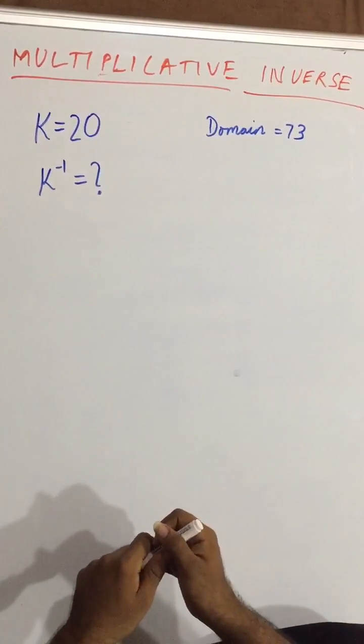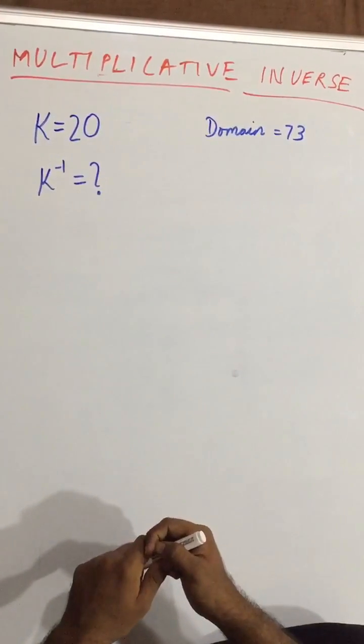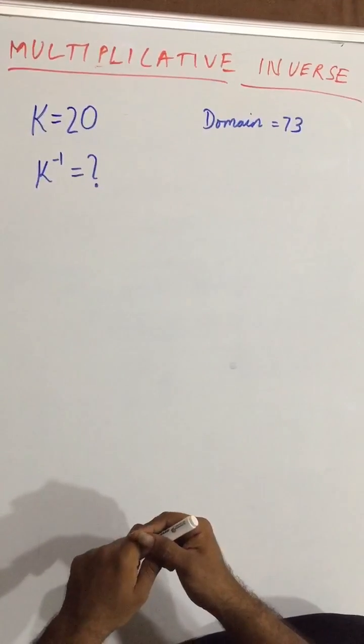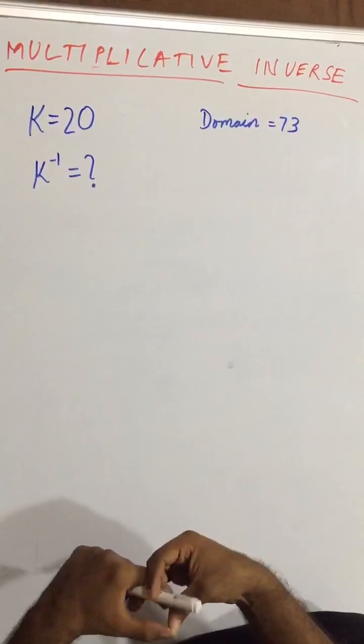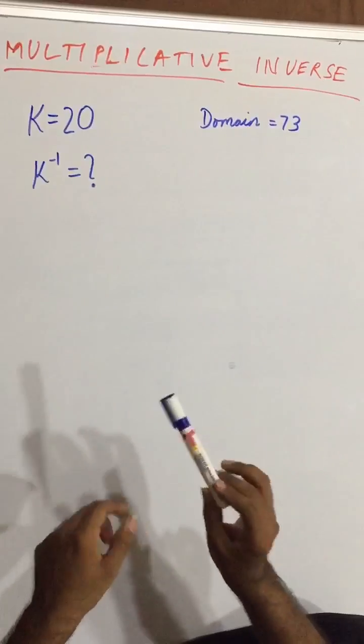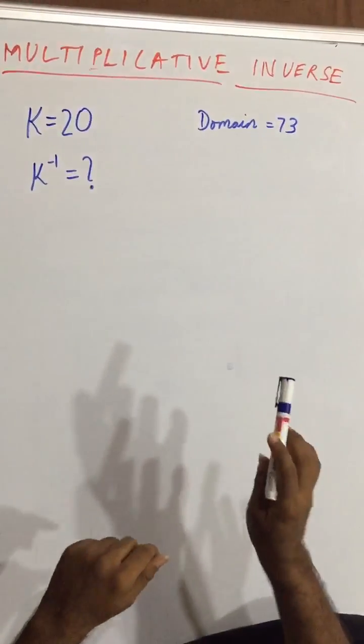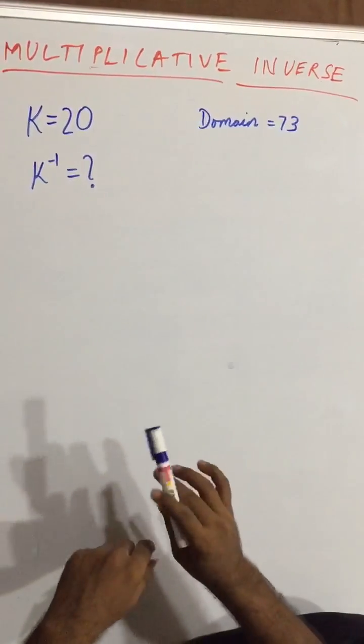Hello friends, welcome. In this lecture we are going to learn about how to find multiplicative inverse. Let us assume that you are given a key whose value is 20 in domain 73 and we have to find the K inverse.